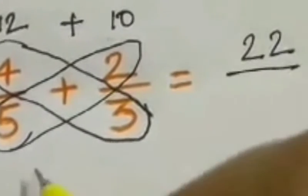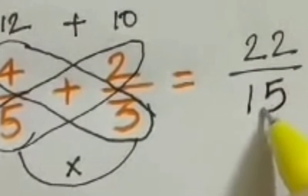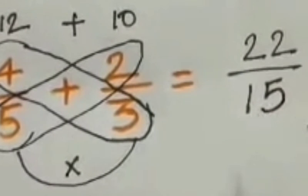Tapos i-times lang natin yan. Equals fifteen. So twenty-two to the fraction of fifteen is the answer.